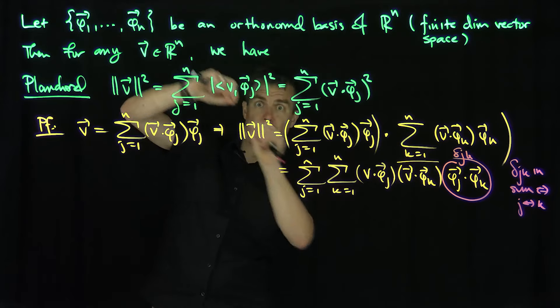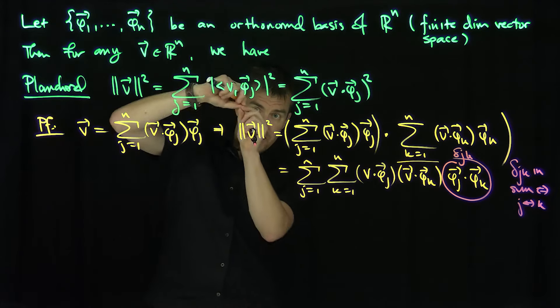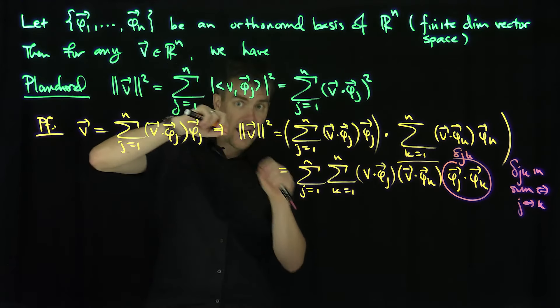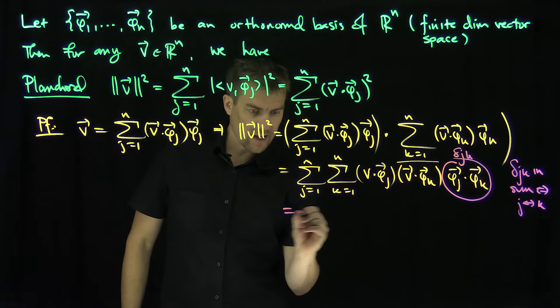So every instance of j can be replaced with k. In other words, you're summing along the what? You're summing along the diagonal. So the Kronecker symbol takes a double sum and sums along a diagonal. In this case, the j equals k diagonal.